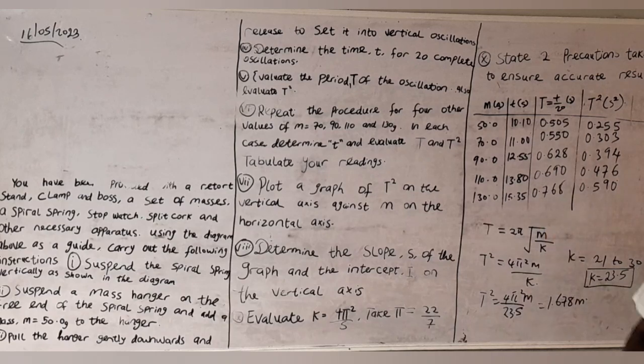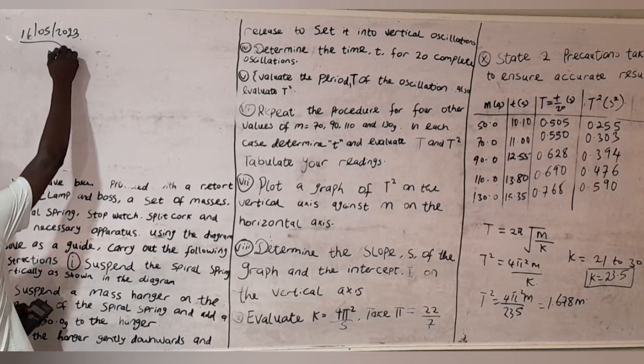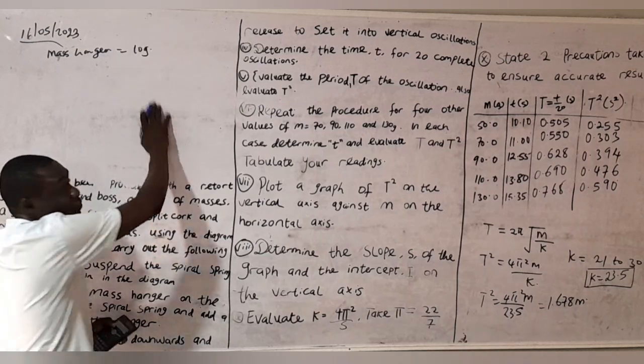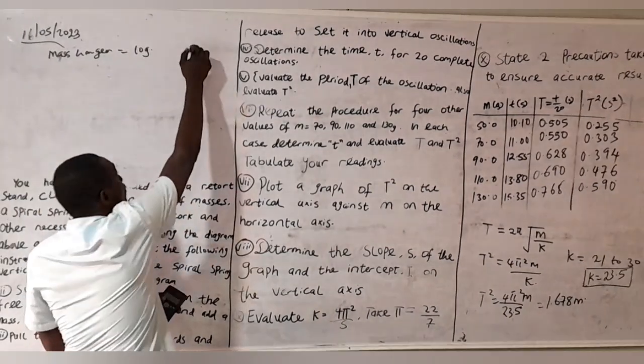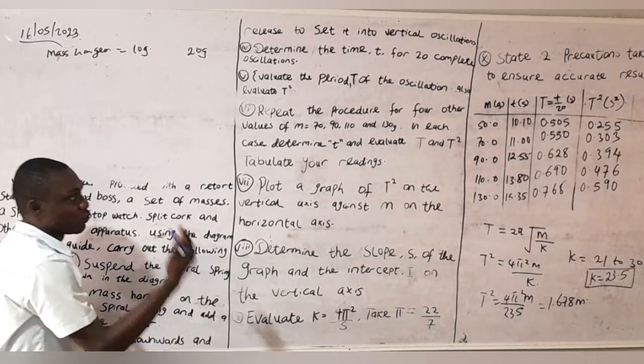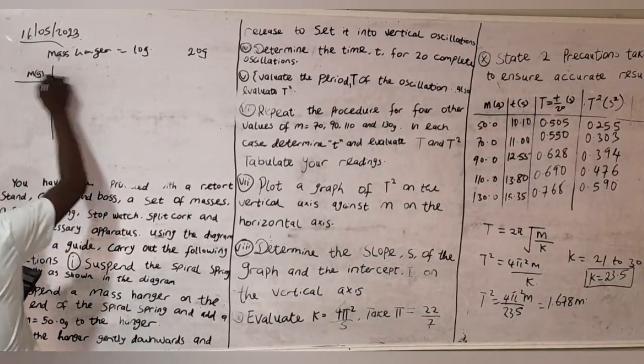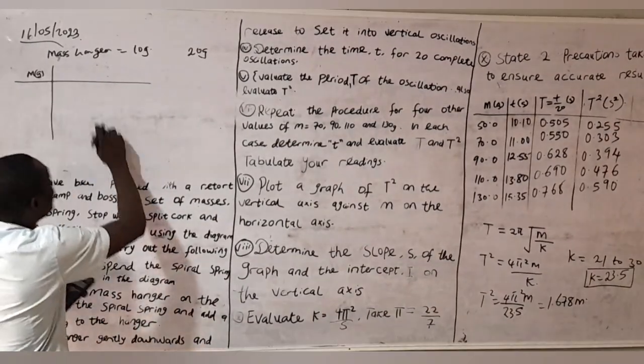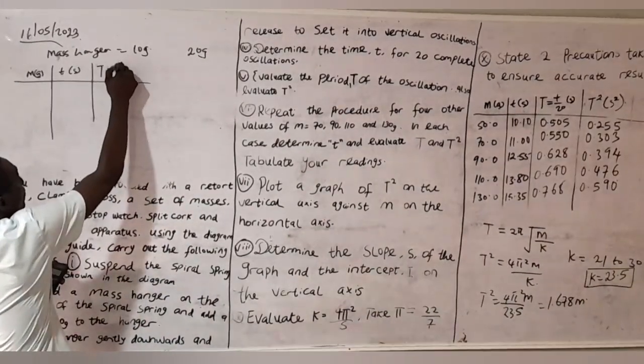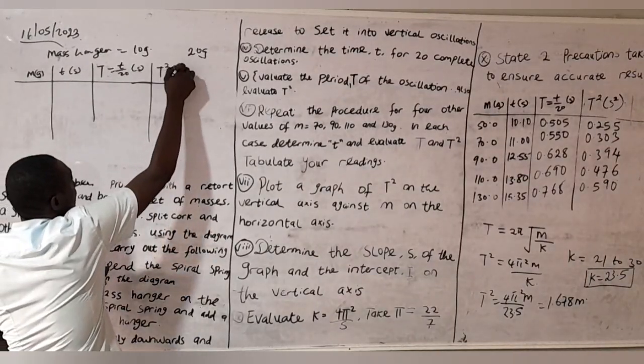Now all you have to do is this. I'm going to draw this table. So I'm going to have m in grams, then I have T in seconds, I have t = T/20 in seconds, and I have the last part, T² in seconds squared.